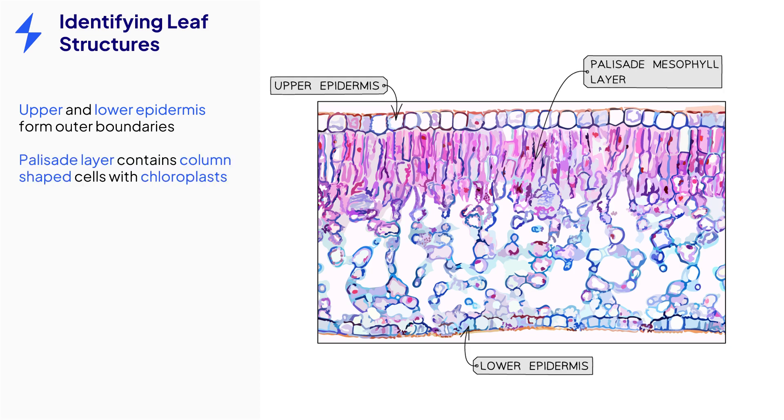The palisade layer will contain cells that are column-shaped and you may be able to see many chloroplasts in them. Unlike the images in a textbook, this part of the leaf may contain several layers of cells. The spongy mesophyll layer can be identified by the large intercellular spaces between the cells and is also several cell layers thick.